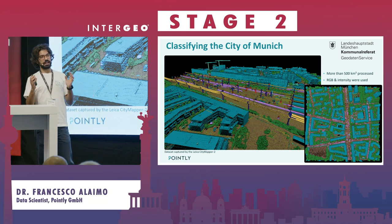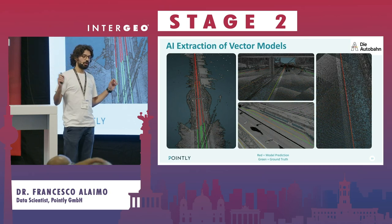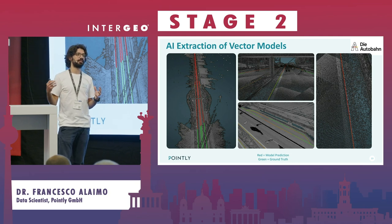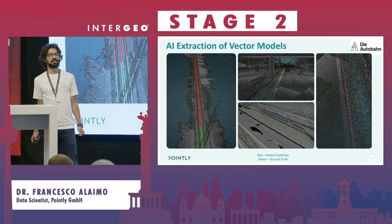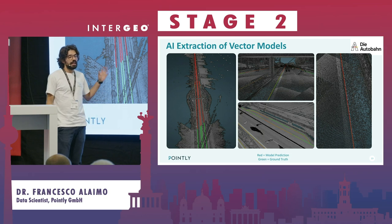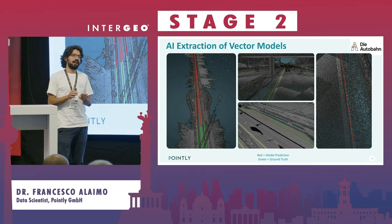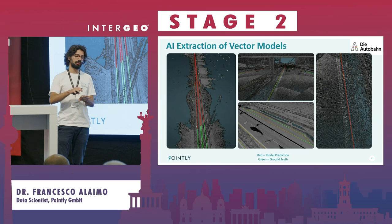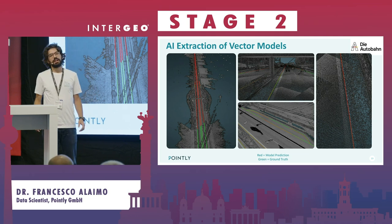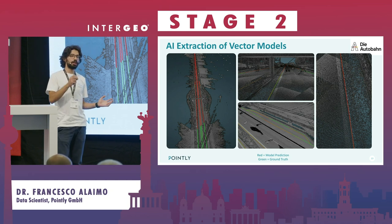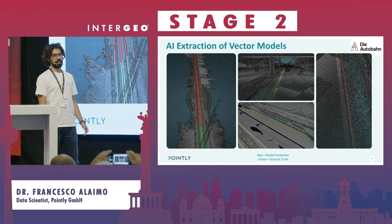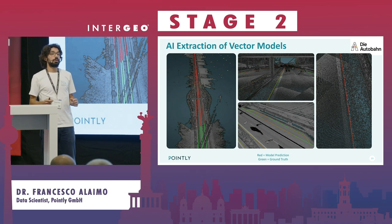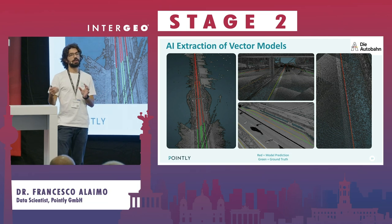Those were the point cloud classification examples. Before finishing I want to speak about the extraction of vector models. We can classify point clouds, but what users and clients ultimately want is more analytics. We worked with the Autobahn GmbH to extract the line separating asphalt from the rest of the ground — not road markings, but the actual geometry of where the asphalt finishes. This is normally done by a human expert with dedicated tools drawing this line along many hundreds of kilometers of highway. Using point clouds obtained from a scanner mounted on a car, we created a deep learning model whose input was a point cloud and whose output was exactly this line.